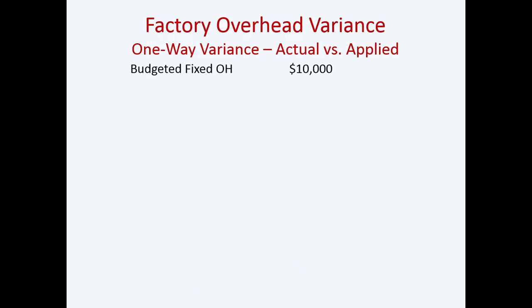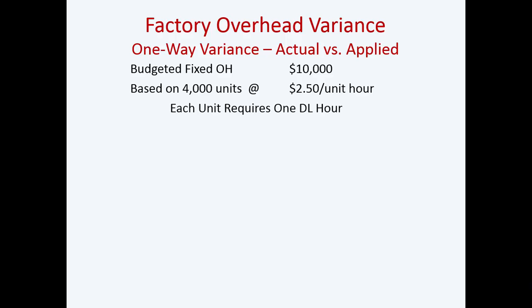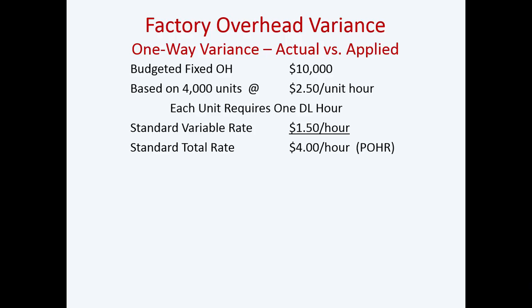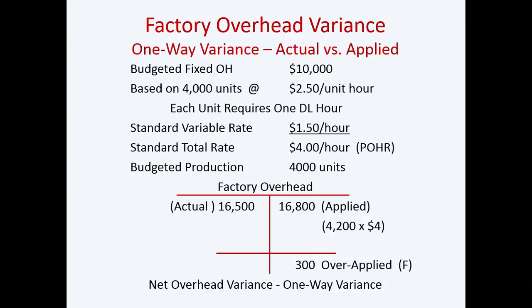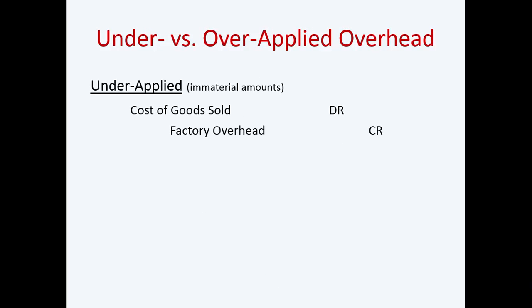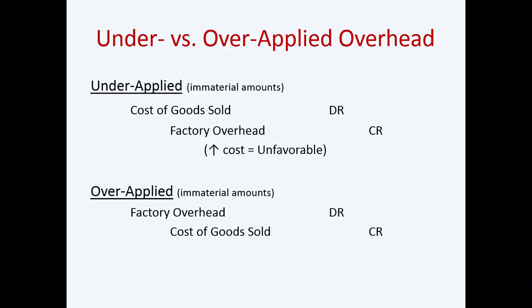Factory overhead variance — the one-way variance — is actual versus applied. Budgeted fixed overhead is based on 4,000 units, each requiring one direct labor hour. The standard variable rate is $1.50 and the standard total rate is $4 an hour. Budgeted production was 4,000 units; actual overhead was $16,005 but applied was $16,008, so you had $300 over-applied. The net overhead variance is a one-way variance — you're just looking at actual versus applied. For under- or over-applied overhead, you adjust, usually to cost of goods sold if it's immaterial.